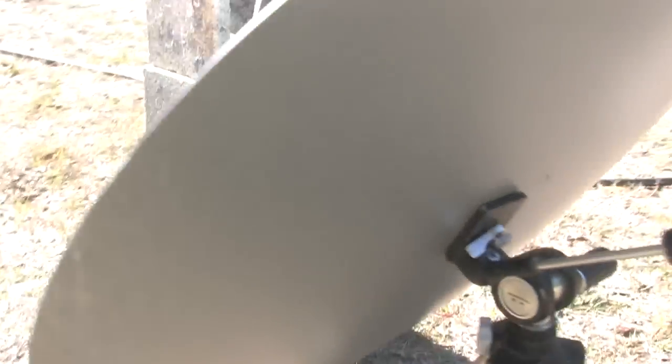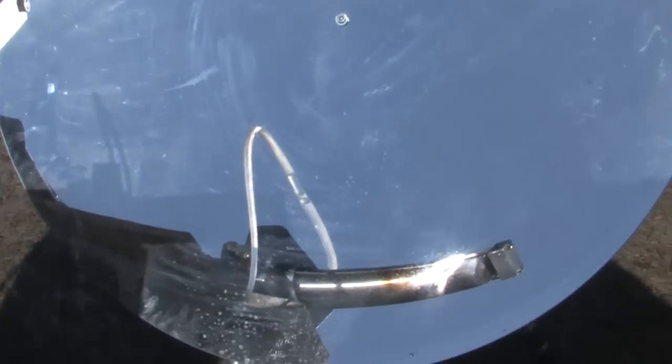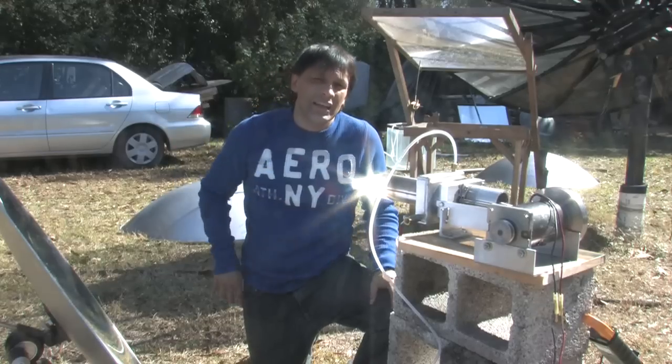This one does pretty good. This is a 35 inch parabolic mirror that we have shining on it. These are very powerful mirrors. They're not as strong as the Fresnel lenses but I just wanted to see how this mirror holds up with this engine.